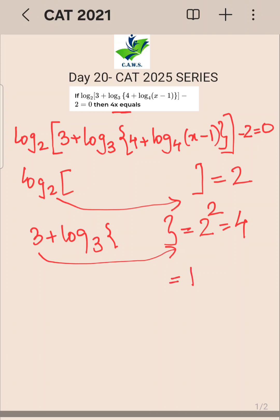Which is equal to log to the base 3 of 4 plus log to the base 4 of x minus 1. Now this 3 will go on the other side, the 1 will go to the power.